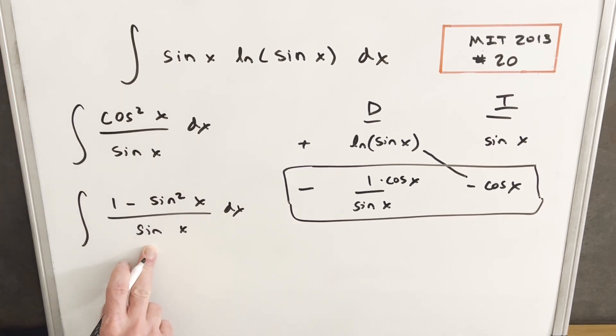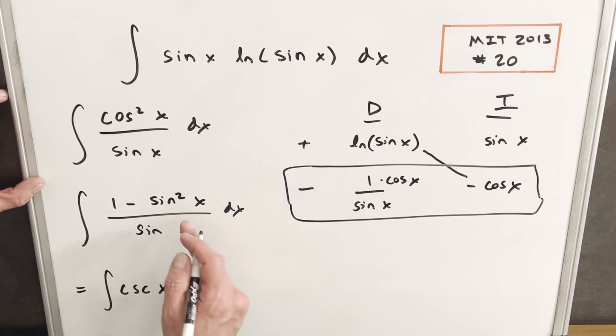And then we'll have our sine x in the denominator. And then what I can do here is break this into two integrals with this minus sine. So we're going to have 1 over sine x. So our first integral is going to be just cosecant x minus sine squared over sine. One of these is going to cancel out. We're going to have just a sine x.